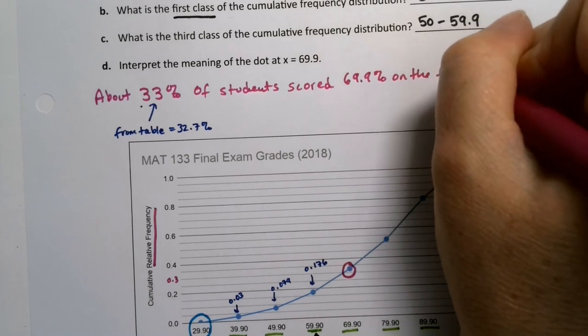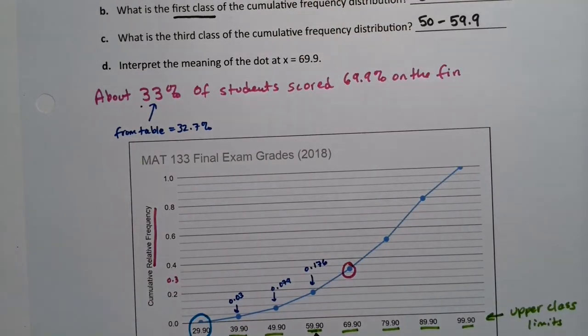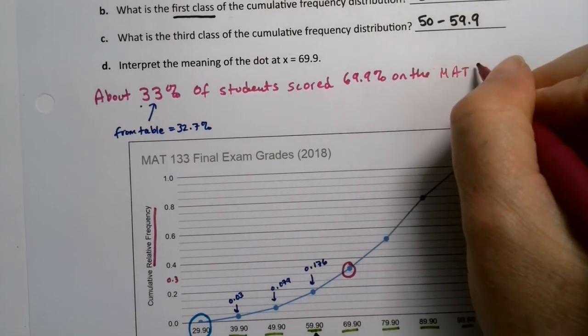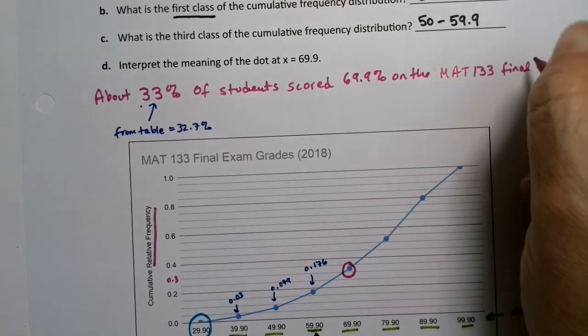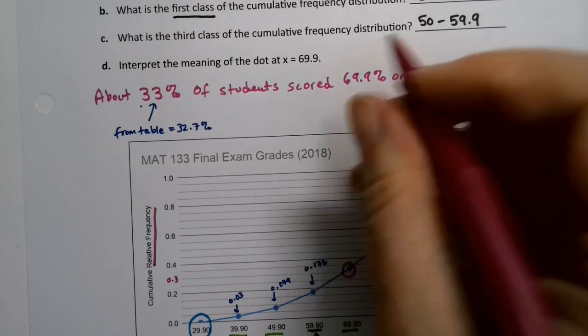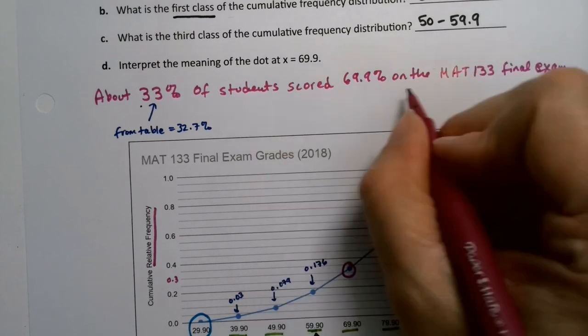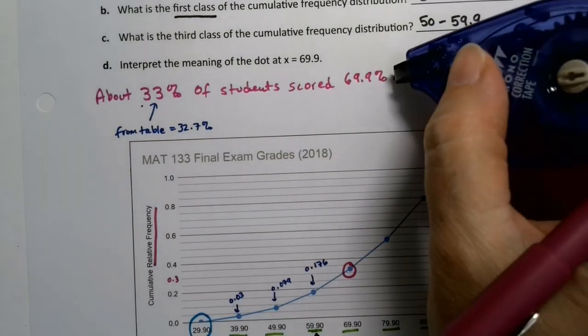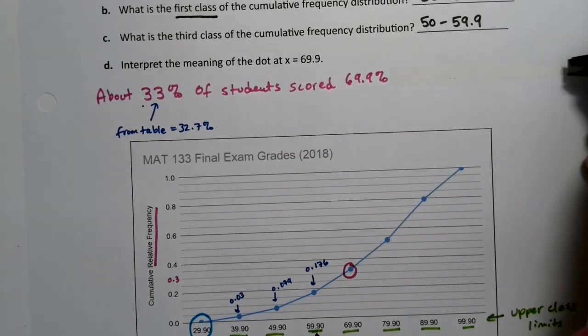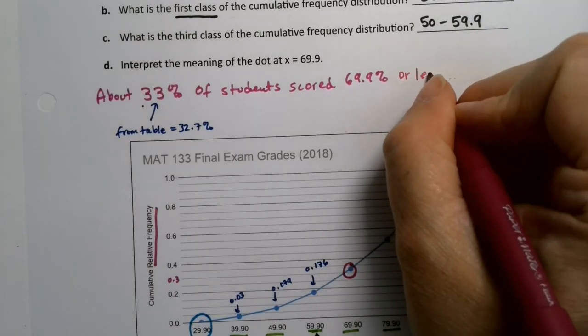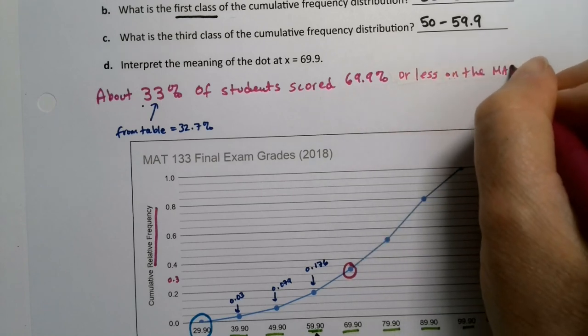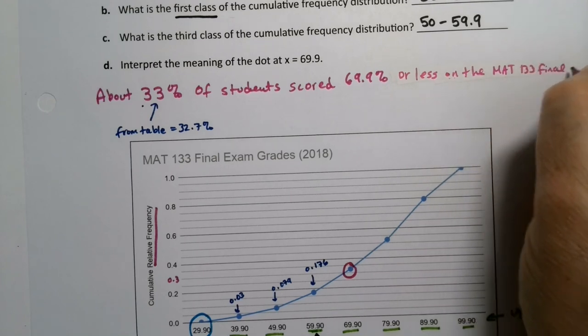So we would say about 33%, because we're eyeballing this, if we pretend that we don't have the table from the previous page. So if you look at the table on the previous page, we can actually tell it's 32.7%, but if we don't have that, you're just kind of eye-winging it. So if you say 34, 33, 32, somewhere in there, so about 33% of students scored 69.9% or lower on the Math 133 final. And this was in 2018, so I'll just finish that right there.